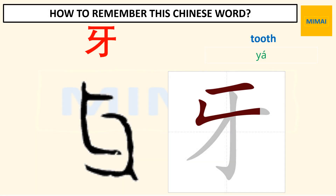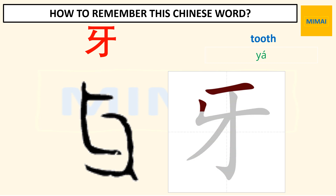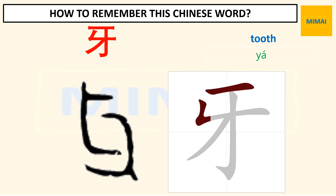Now we learn the Chinese word for 'tooth.' On the left is the early version of this character, and on the right is the modern simplified version of this character. This word is pronounced as follows.